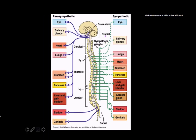This next picture illustrates the two-stage neural path nicely. It shows the relative lengths of both the pre- and postganglionic fibers in the parasympathetic and in the sympathetic nervous systems.